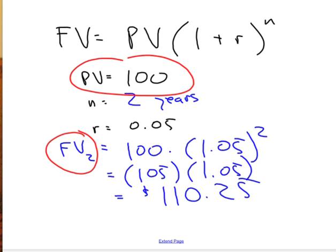After one year, your $100 has turned into $105. After another year, that 105 is worth 1.05 more, because you earn 5% interest on it. Either way you calculate it, you get $110.25.